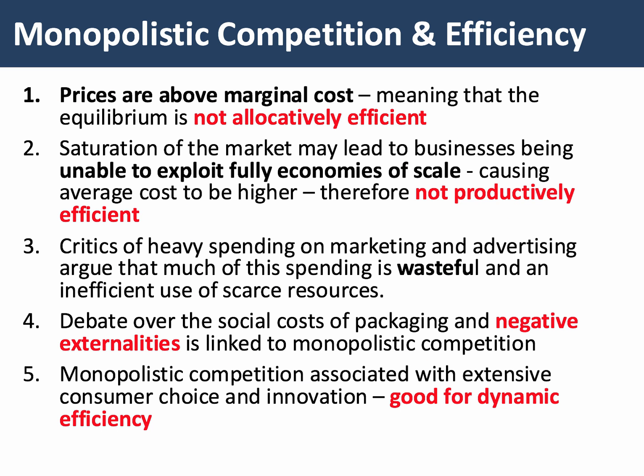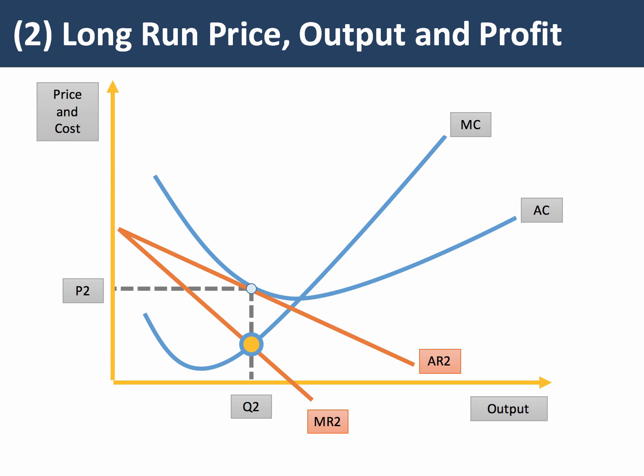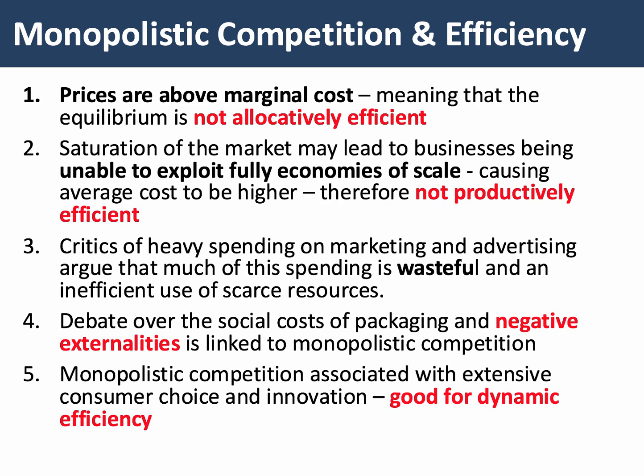In monopolistic competition there's a lot of spending on marketing and advertising. Some economists argue that this is inefficient — advertising may be a zero-sum game if all firms are spending heavily on marketing without much impact. There are also debates about how products are packaged and the externalities associated with that, which could bring in a social efficiency point. However, being successful in this market often means having differentiated products, lots of choice, and lots of innovation, so you can make a case that this market structure is good for dynamic efficiency.